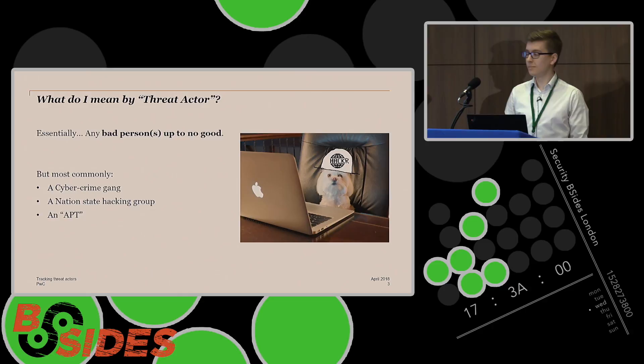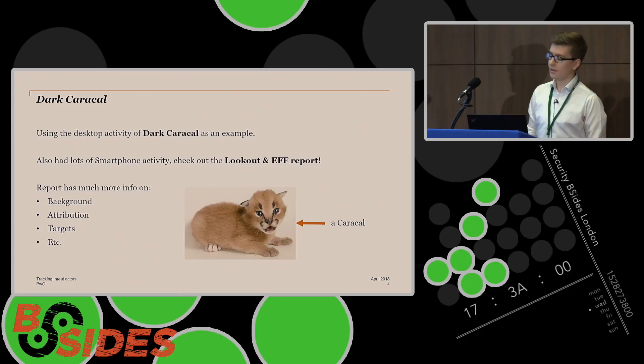So starting off, what do I mean by a threat actor? When I say threat actor, I'm essentially saying any bad person up to no good. Normally when people say this, they're referring to maybe cyber criminal gangs or nation state hacking groups, which are also known as APTs or advanced persistent threats. I've also done a little artist rendition of what the threats are like nowadays, but might not be accurate. So the threat actor that I tracked as part of this was called Dark Caracal. They had quite a lot of activity last year and they were the subjects of a really interesting report by Lookout and EFF. If you want some more details about this threat actor, like their background, attribution, and who they were targeting, then check out that report. But for this, I'm just gonna use them as a backdrop and show how you can track threat actors by tracking them.